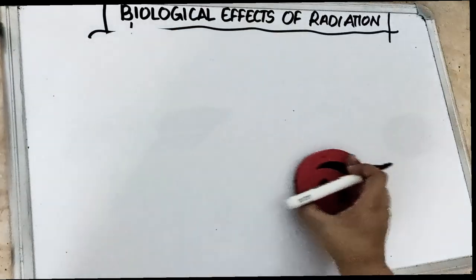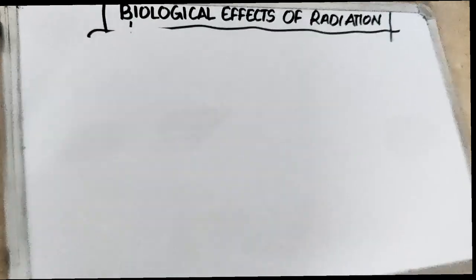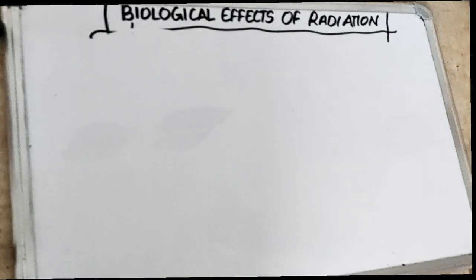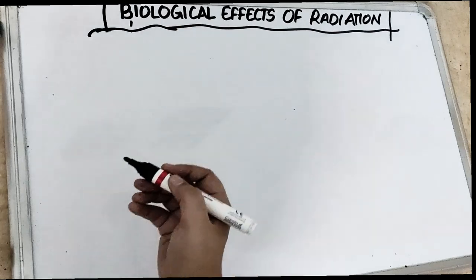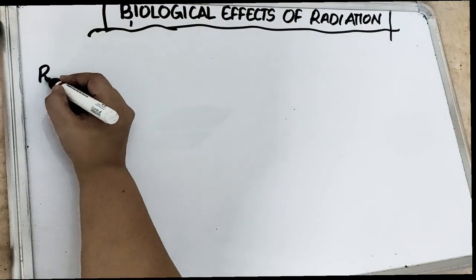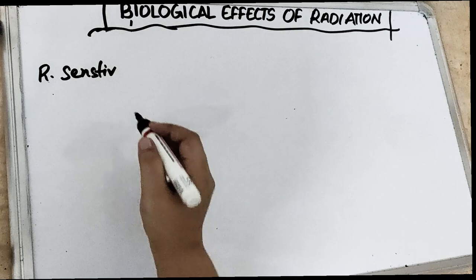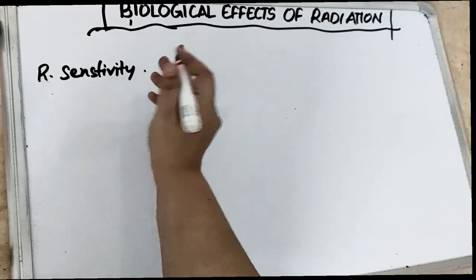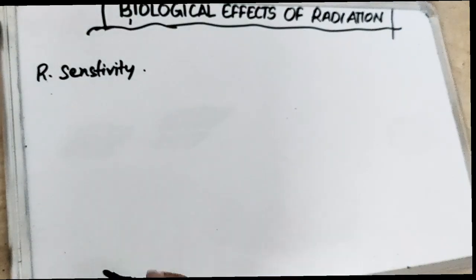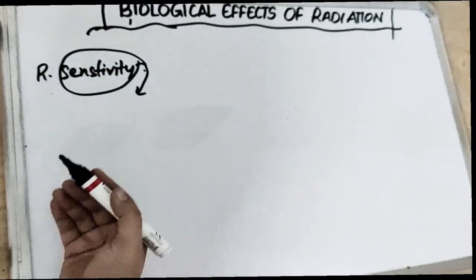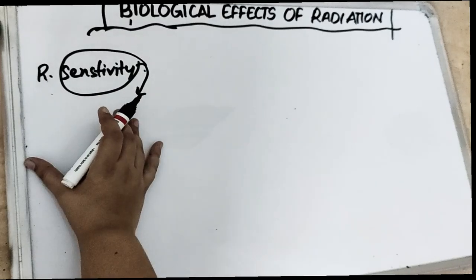It is very important to understand the first part in order to understand the second part. Before starting with the biological effects on tissues at the molecular level, let's first understand what we mean by radio sensitivity. Sensitivity means that we are sensitive to any specific thing — that this particular thing is going to affect you.